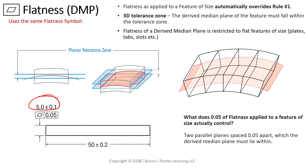This one is very unique: flatness DMP can be applied at maximum material condition regardless of feature size. In fact, we state in our course that most often when we see this, it is going to be at maximum material condition. When we do that, we can gauge it — we can use a functional gauge to inspect it. It really threw everybody for a loop that we can have those modifiers applied to this, unlike flatness on a surface.